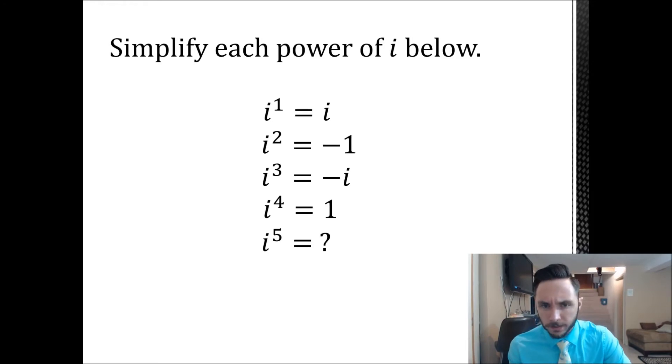i to the fifth is next. And we're going somewhere with this, obviously. I know i to the fifth is just i to the fourth times i. Well, I just established that i to the fourth is one. And one times i is just i. Now we're back to i.